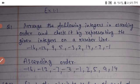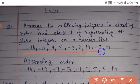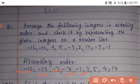Exercise 1.1: Arrange the following integers in ascending order and represent the given integers on a number line. The integers are: minus 16, minus 12, 9, 5, minus 3, minus 2, 14, minus 7, and minus 1. In ascending order: minus 16, minus 12, minus 7, minus 3, minus 1, 2, 5, 9, and 14.